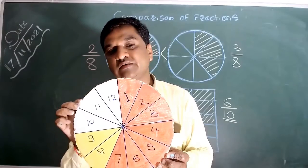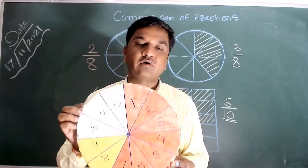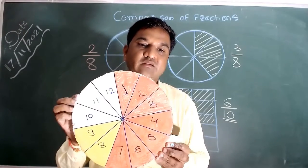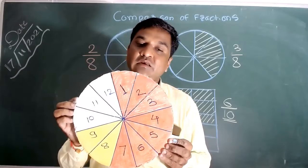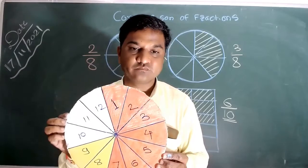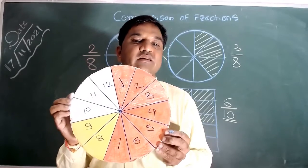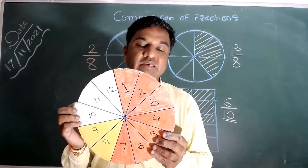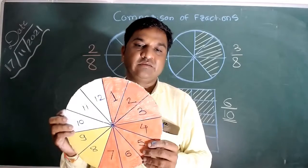Here also you can see that the denominators of all these fractions — 7 by 12, 3 by 12, and 2 by 12 — are equal. So when the denominator is equal, they are like fractions, and like fractions can be compared very easily.